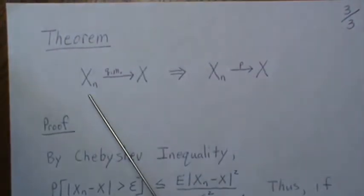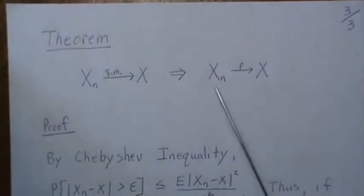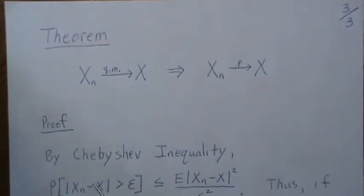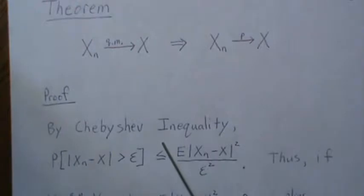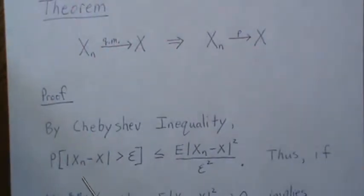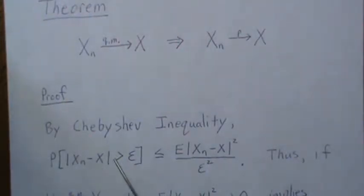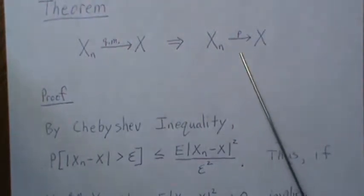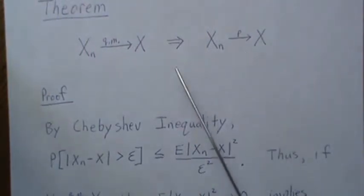So here we're going to look at convergence in quadratic mean implies convergence in probability, and the proof starts by using Chebyshev's inequality. That is, the probability of this difference being greater than zero goes to zero. If those get really close, this probability goes to zero.